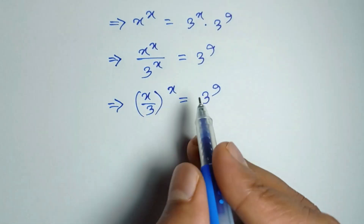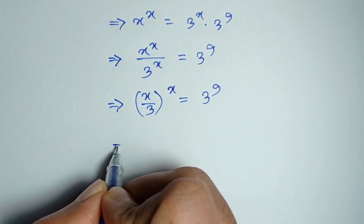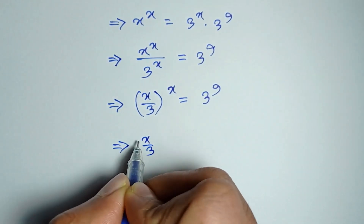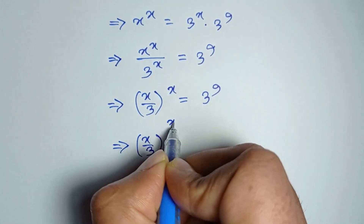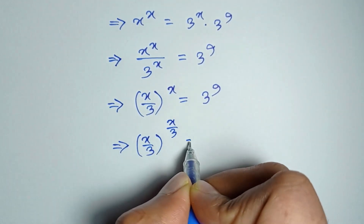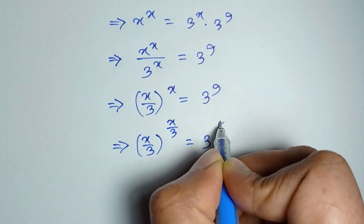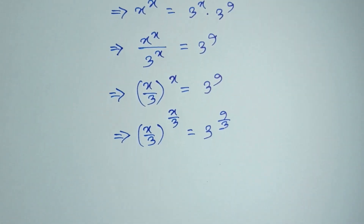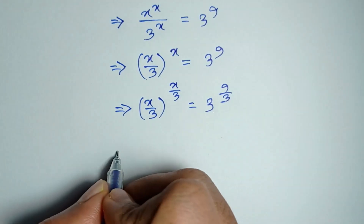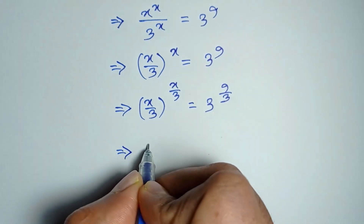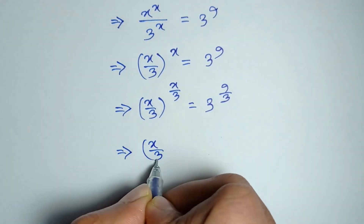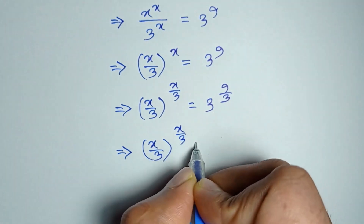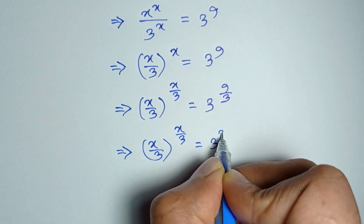If we divide both sides by 3, we get (x/3) to the power (x/3) is equal to 3 to the power 3.